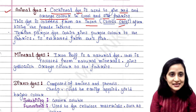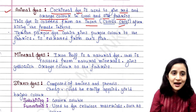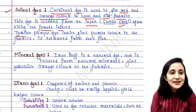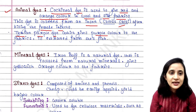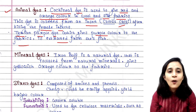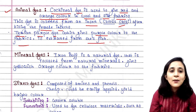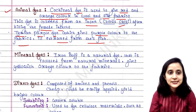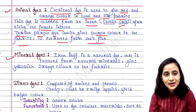The cochineal dye is extracted after killing the female insect. One more example is Tyrian purple dye, which gives purple color to the fabric. It is extracted from shellfish.